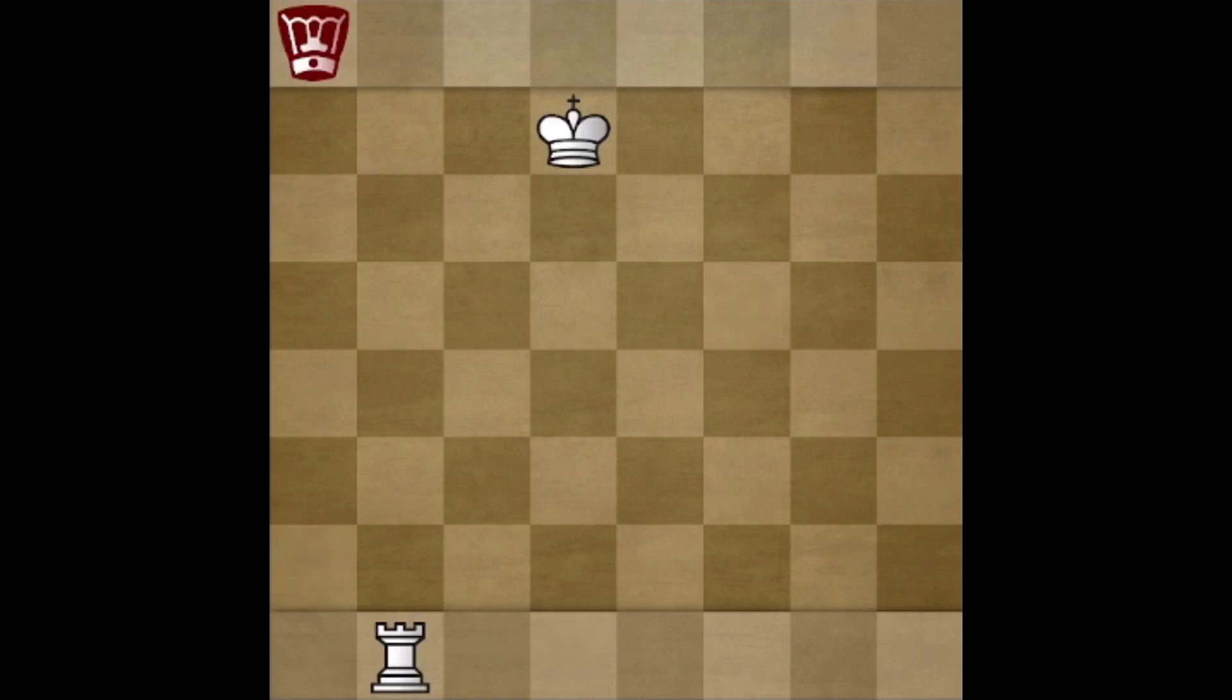The third and final rule is stalemate is not a draw like a normal chess but it's a loss for the stalemated player. For example here the red king can't move here because of the rook and can't move here because of the king face-off so with red to move this is stalemate and red loses the game.